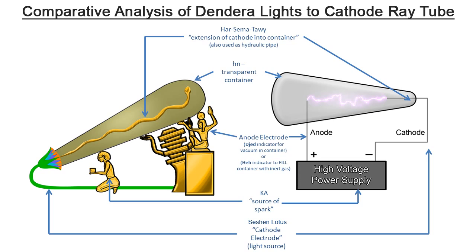A comparative analysis of the components of the Dendera light objects to the cathode ray tube technology shows that the symbolic meaning of all components described corresponds to a component of the cathode ray tube electrical light source. Harsimatawe, made of gold, corresponds to the cathode metal electrode extending into the glass container. The transparent hen container corresponds to the glass container of the cathode ray tube. Either the Jed pillar or He, made of gold, serves as the anode metal electrode. The Ka on its knees — the divine spark — corresponds to the high voltage power supply. The lotus flower connects the Ka to Harsimatawe the Ba inside the transparent container, and also connects the Ka to the anode electrode to complete the circuit.